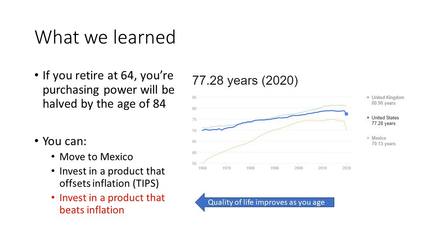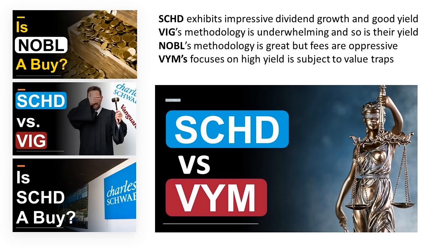You can invest in a product that offsets inflation — what they call TIPS — or, and this is what we choose to do with our money, you can invest in a product that beats inflation. When you do that, the quality of life that you enjoy in your elderly years improves as you age. That's the ideal solution. So that brings us to dividend growth ETFs.